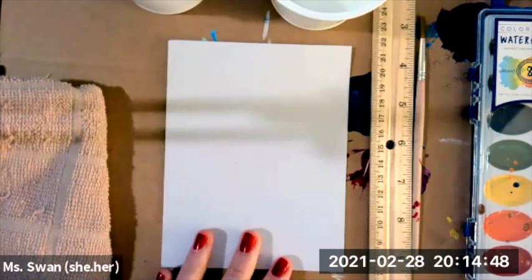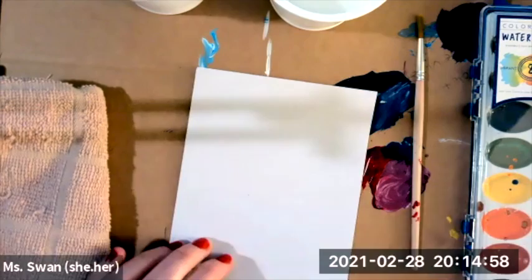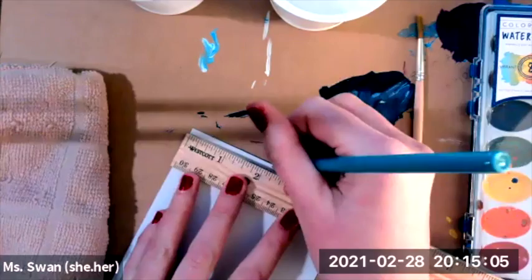To start, we are going to practice our four different techniques, which is wet on wet, dry on dry, dry on wet, and wet on dry. I'm going to take my ruler and divide my piece of watercolor paper here into four different sections.